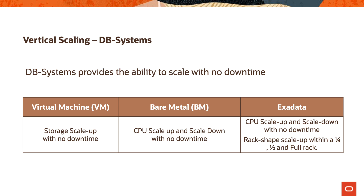For vertically scaling database systems: virtual machines allow you to scale storage up with no downtime; bare metal allows you to scale CPUs up and down with no downtime; and Exadata allows you to scale CPUs up and down and even change your rack shape from quarter rack to half rack to full rack. You'd typically start smaller — especially for a proof of concept — and expand, unless you're already running on-prem and doing a migration where you know exactly what you need. It's much easier to scale up than to decrease resource size, especially for storage.